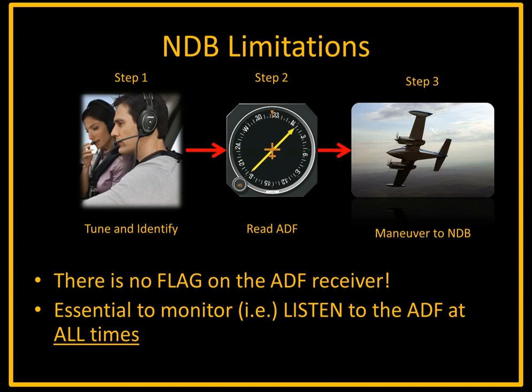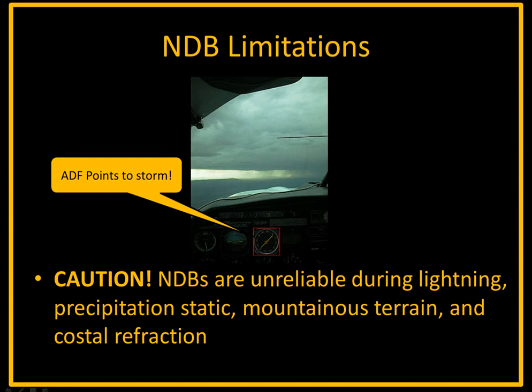There are also some limitations to an NDB. In particular, during a lightning storm, precipitation static, mountainous terrain, and coastal refraction, the NDB can become unreliable and give false values. An NDB will always point you directly to a storm, because a storm has a lot of static electricity that gives off electromagnetic radiation — the same as a radio signal. This creates significant interference and a potentially dangerous situation if you follow it straight into a storm. It would be obvious during the daytime, but flying at night in a black sky, you can get into a storm very quickly before you even realize it.